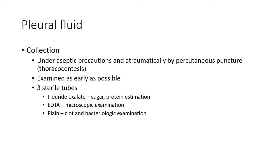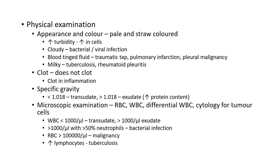All examinations should be done as early as possible. On physical examination, the appearance and color are noted. Normal pleural fluid is pale and straw-colored. Increased turbidity indicates increased cells and cell debris. Cloudy appearance indicates bacterial or viral infection. Blood-tinged fluid is an indication of a traumatic tap, pulmonary infarction, or pleural malignancy. Milky fluid indicates tuberculosis or rheumatoid pleuritis.